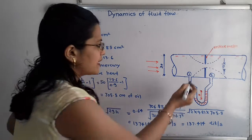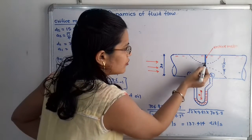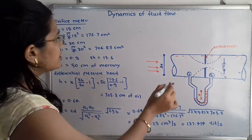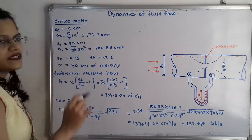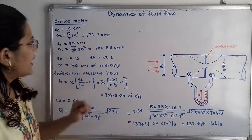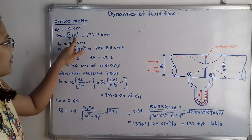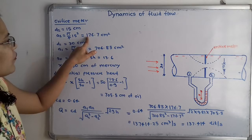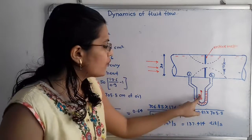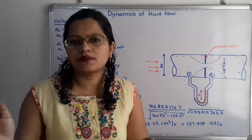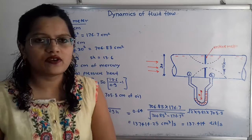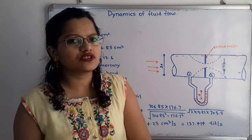On the other side, the diameter of the orifice meter is 15 centimeter, so d2 is equal to 15 centimeter. We consider this as section two, and A2 is equal to pi by 4 times 15 squared, which is equal to 176.7 centimeter square. The value of x is 50 centimeter of mercury. Now we have to find out the rate of flow.